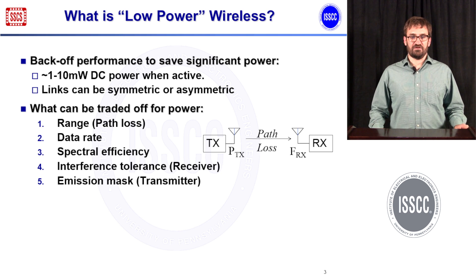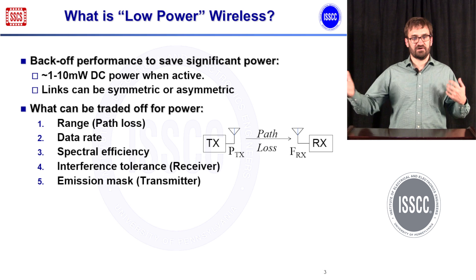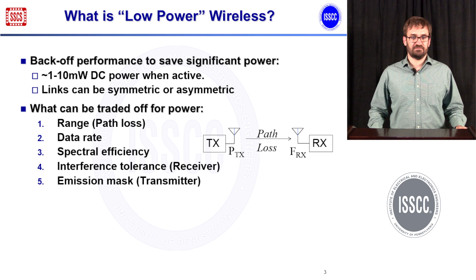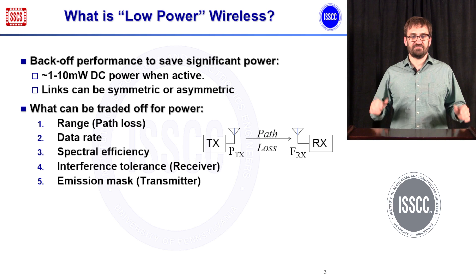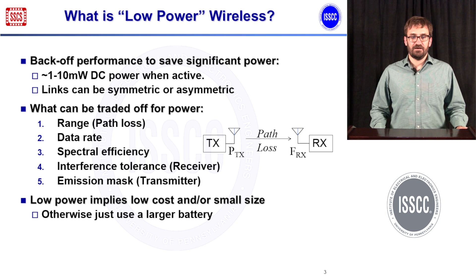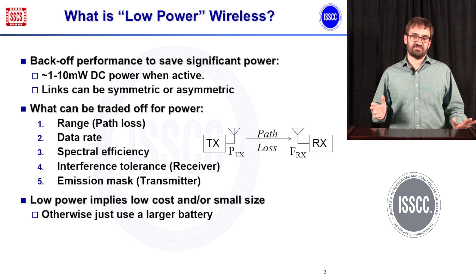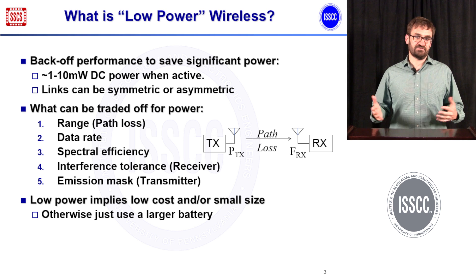What can we trade off for power consumption? We can trade off range — how far apart our receiver and transmitter are — and the associated path loss. We can trade off data rate, how many bits per second we're sending. We can also trade off more subtle things such as spectral efficiency, interference tolerance, and emission masks. Low-power also implies low-cost or small or both, because if you don't need to be small and low-cost, you can just buy a bigger battery and don't need to be low-power.